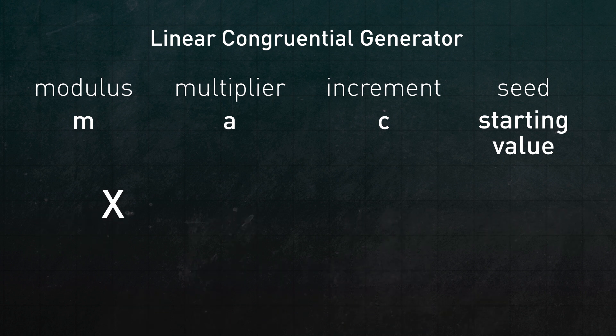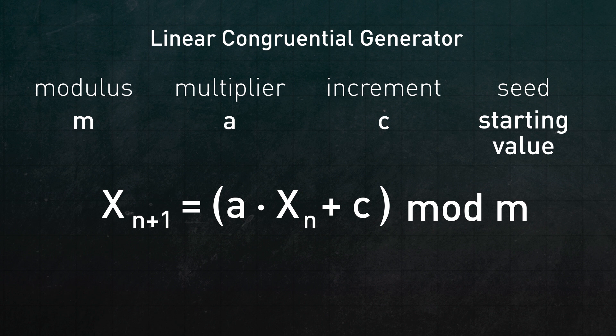x sub n plus 1 is equal to A times x sub n plus C mod M. The numbers in the resulting sequence will be between 0 and 7,828, which is M minus 1.